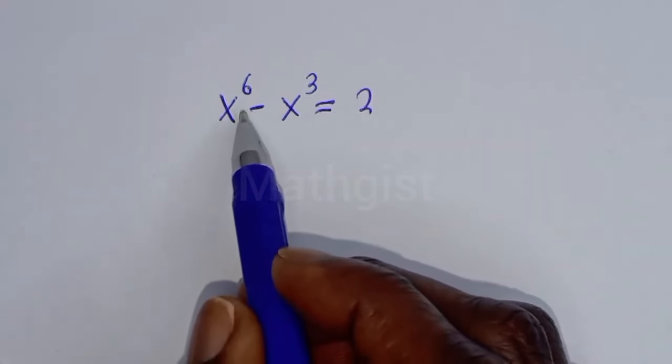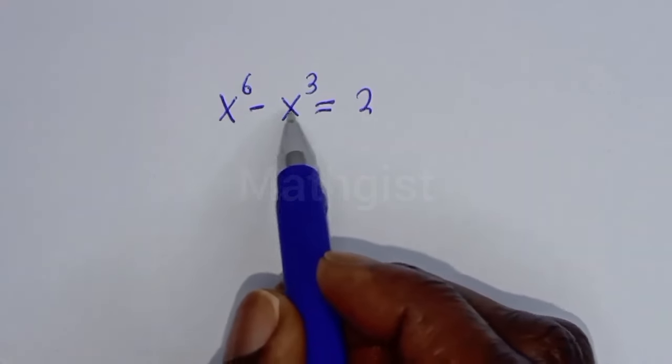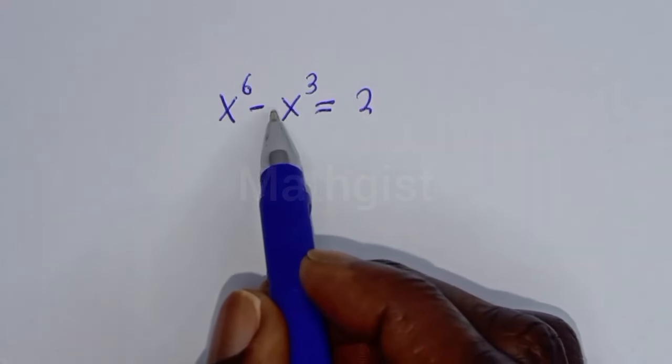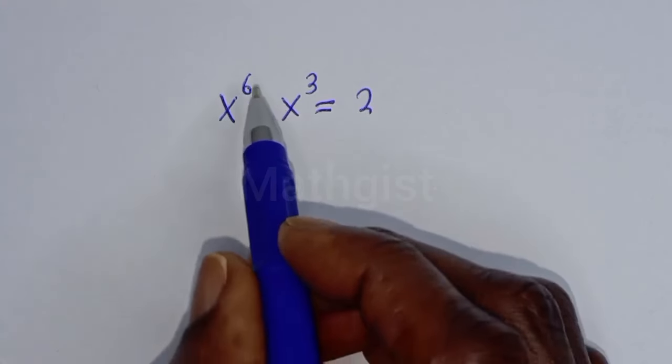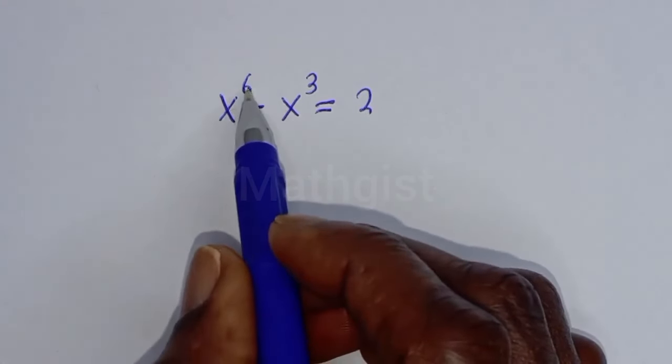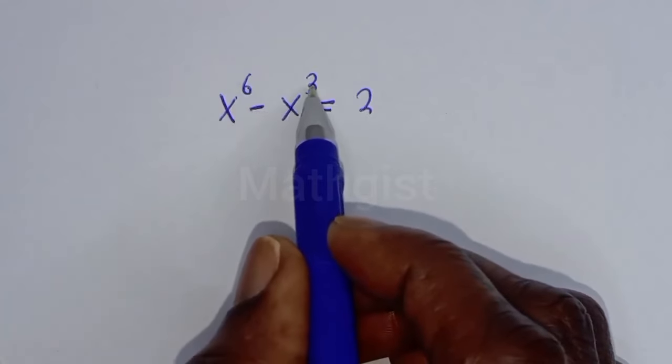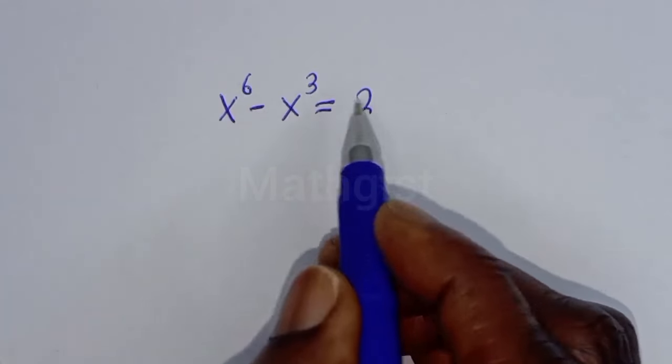How to solve for s from this given Math Olympiad algebra problem? s raised to power 6 minus s raised to power 3 is equal to 2.